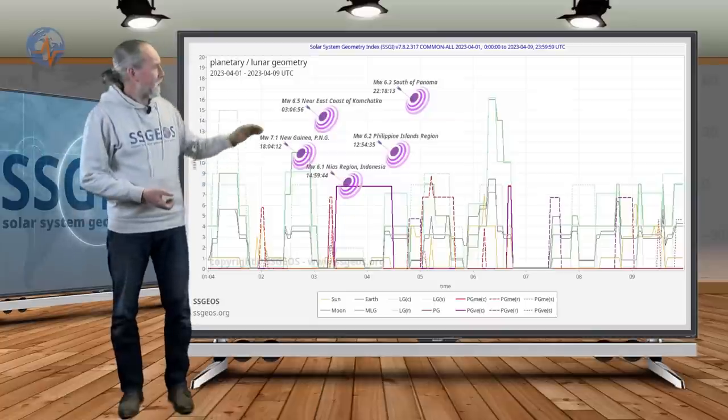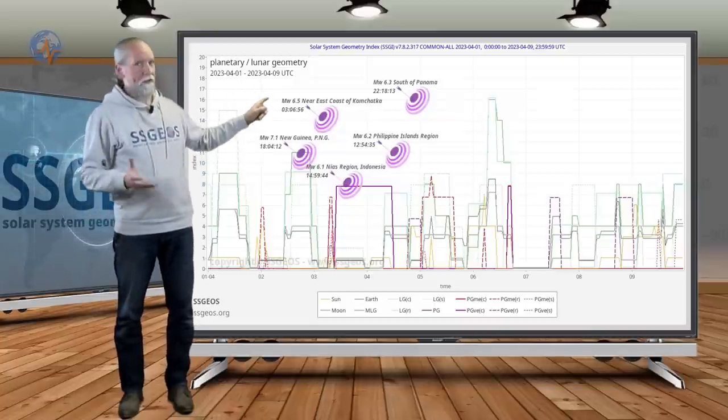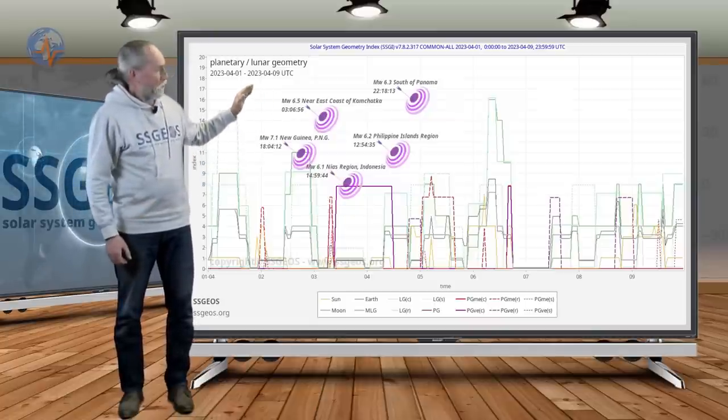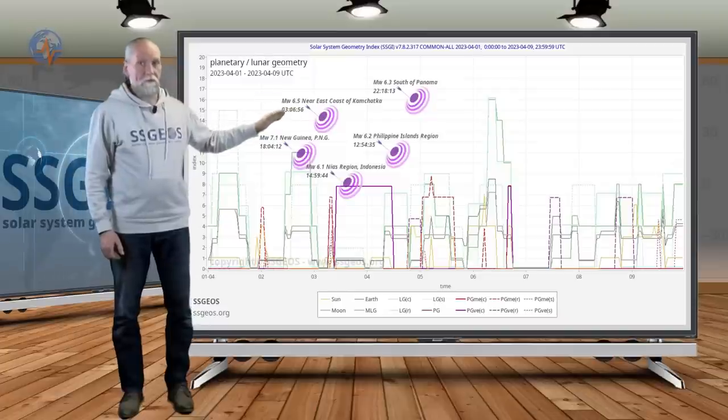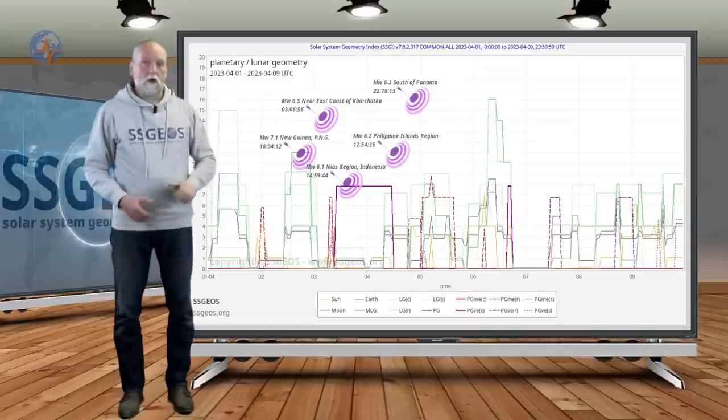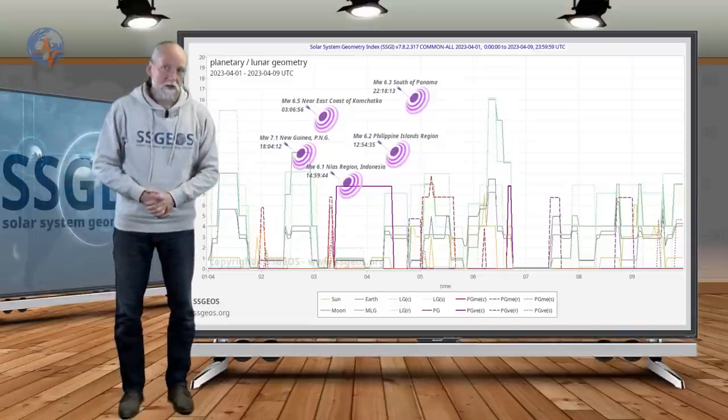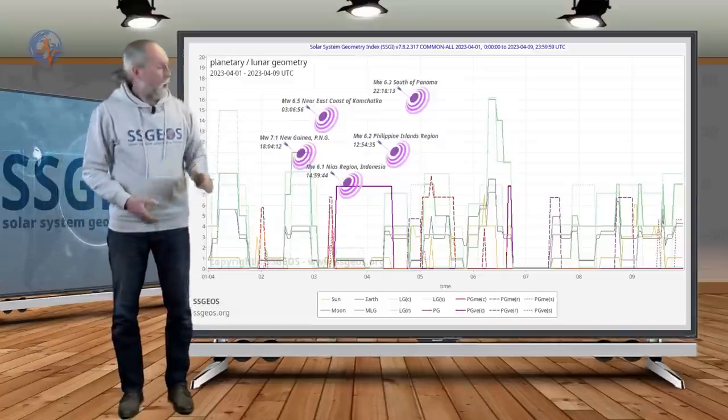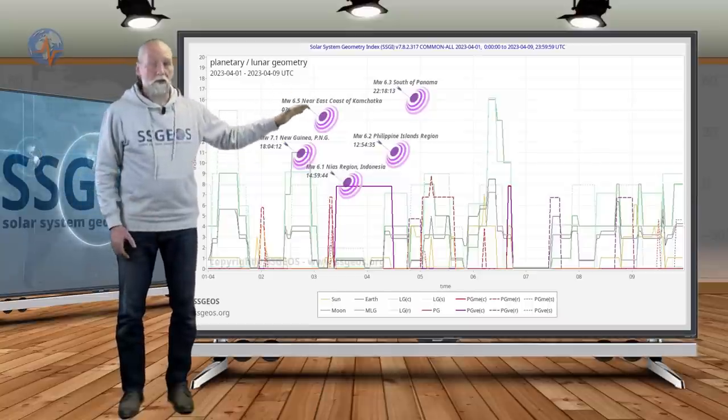If you look at the seismic activity from the second to the fourth, five stronger earthquakes including the 7.1 all converged around the time of the Mars-Venus-Saturn conjunction. After that, no larger earthquakes so far.